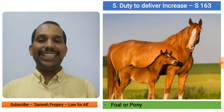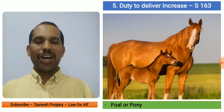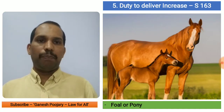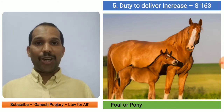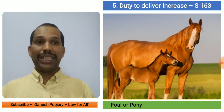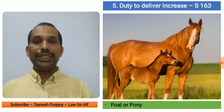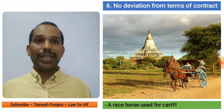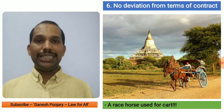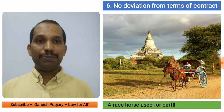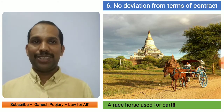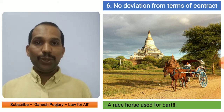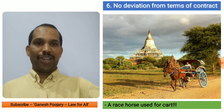The fifth duty is the duty to deliver increase, under section 163. If A left one horse and after one year the horse had a foal or pony, when the Bailor comes back the Bailee must give back both the horse and the foal. Any increase must also be delivered to the Bailor. The sixth duty is no deviation from the terms of contract. For example, if B made a cart and is using the horse for it, that is not allowed — the Bailee must perform only as per the contract. Deviation from the contract terms is not okay.